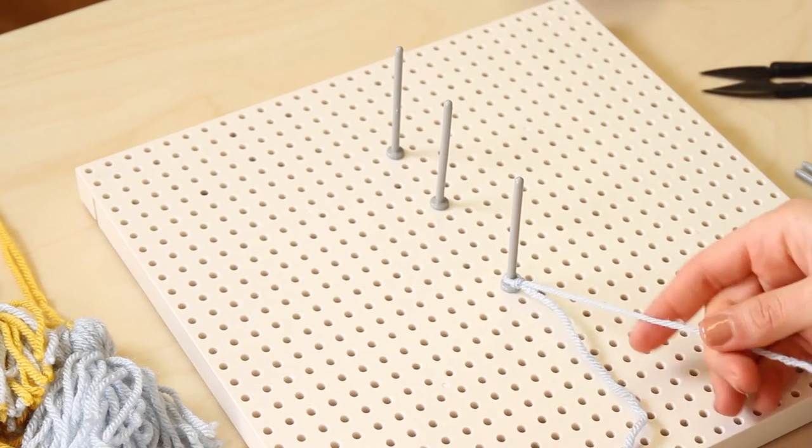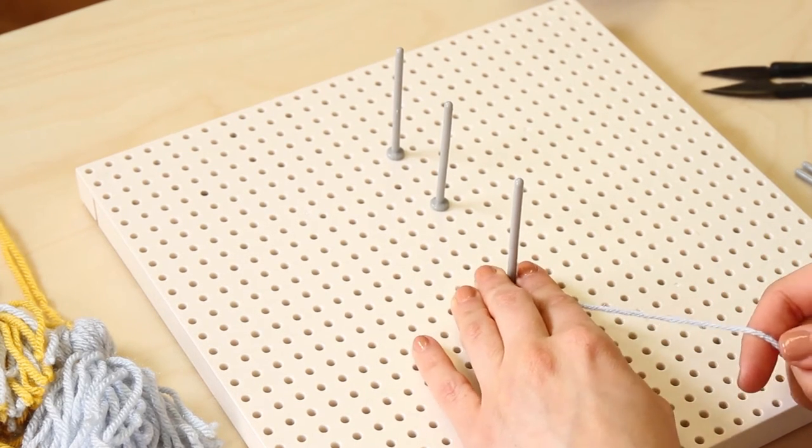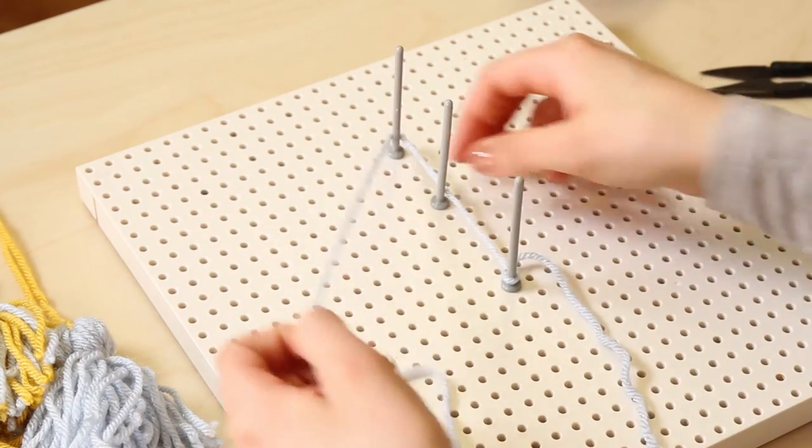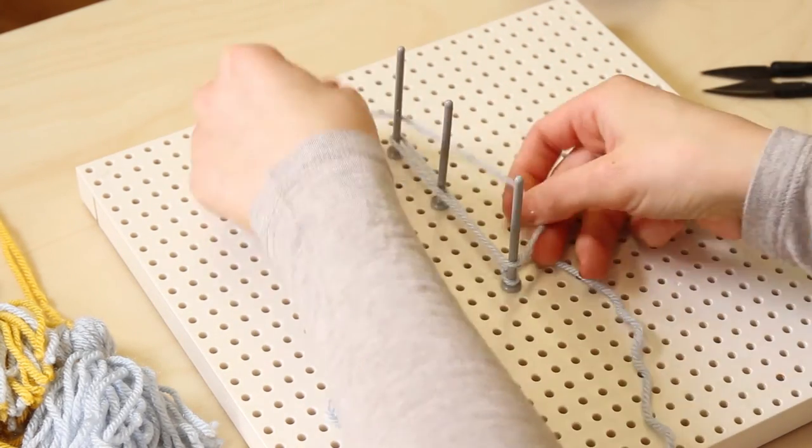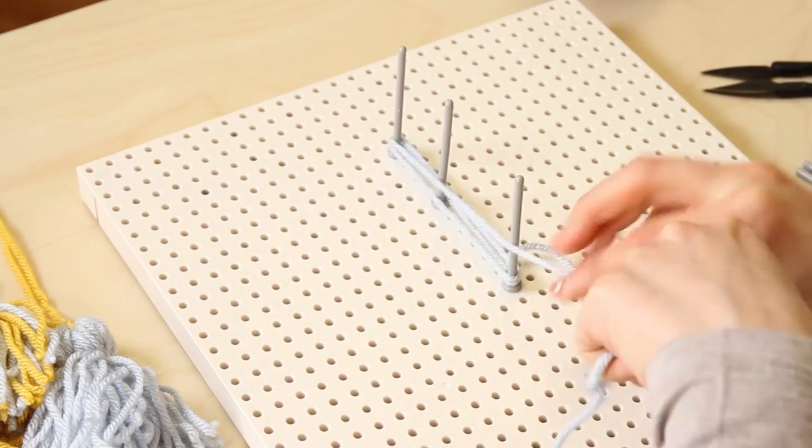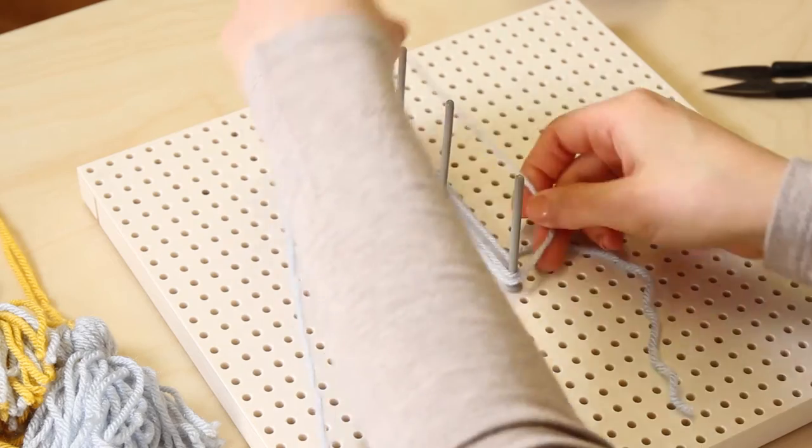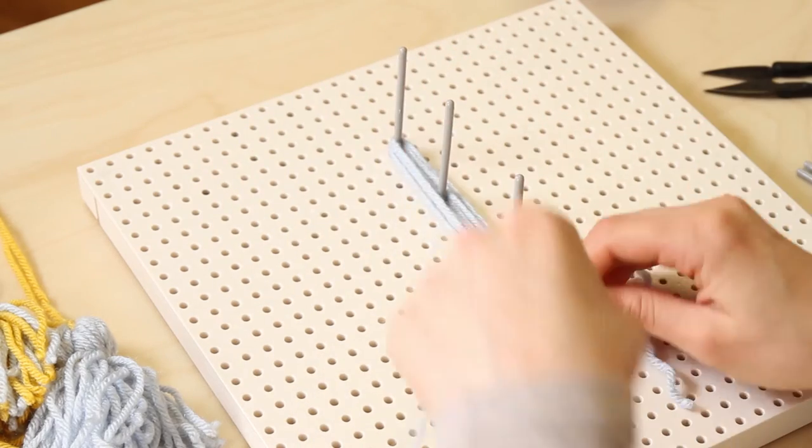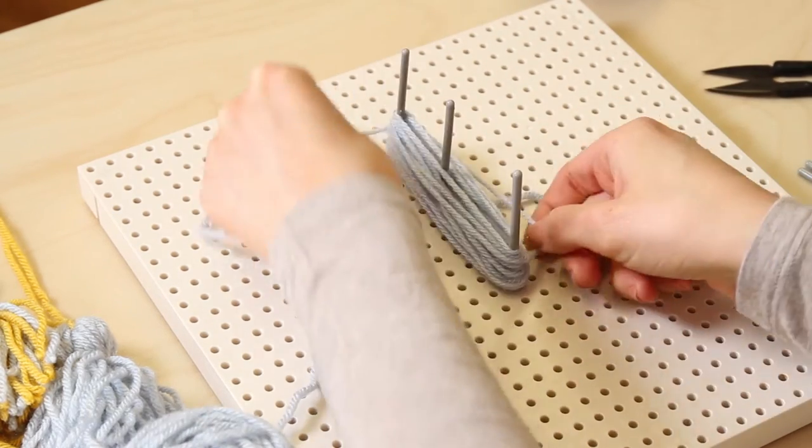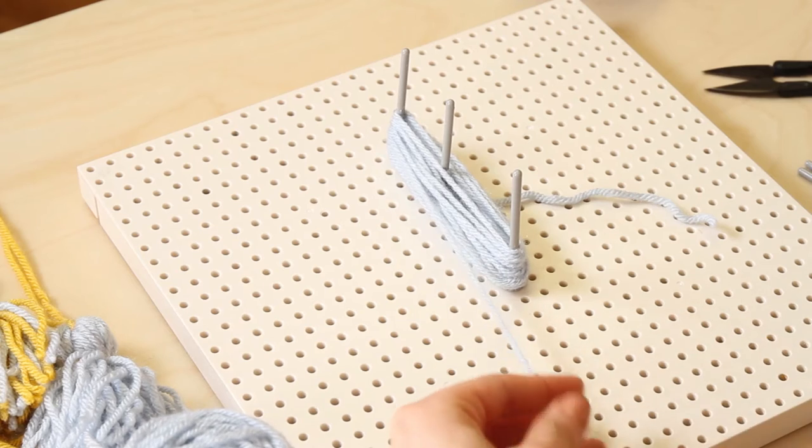Start to wrap around the top embellishment peg and continue around. Don't worry about the middle peg, that's just a marker. When you're wrapping for your tassel, make sure not to pull too tightly around the pegs. The amount of wraps determines the fullness of your tassel. You can use one or more strands at a time.